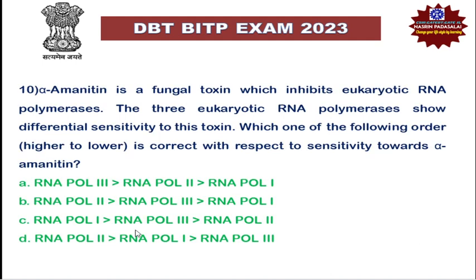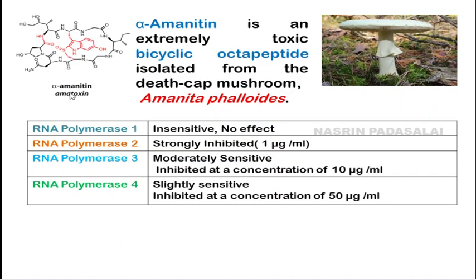The next question is regarding alpha-amanitin, a fungal toxin that inhibits eukaryotic RNA polymerases. It has the capacity to inhibit only eukaryotic RNA polymerases. Alpha-amanitin is a bicyclic octapeptide isolated from the death cap mushroom Amanita phalloides. It is extremely toxic to eukaryotic RNA polymerases. RNA polymerase I is insensitive — this toxin has no effect on RNA polymerase I structure or function.